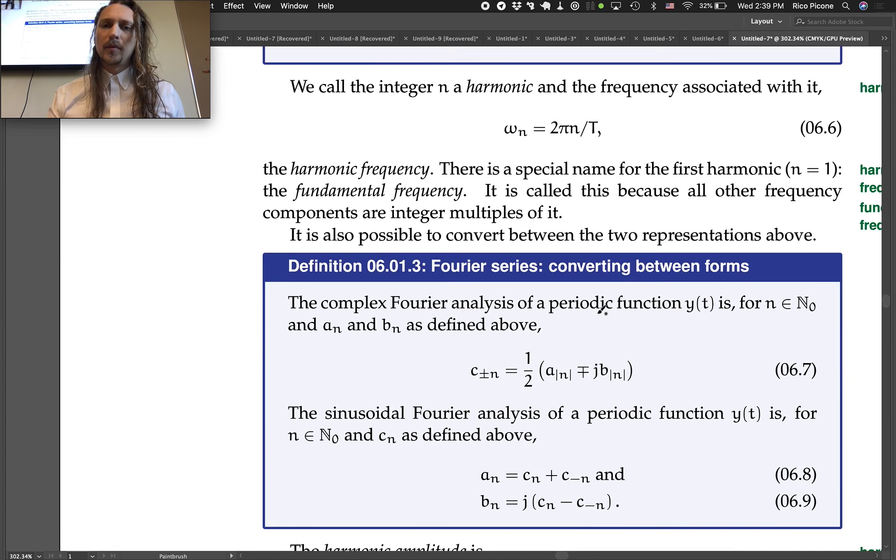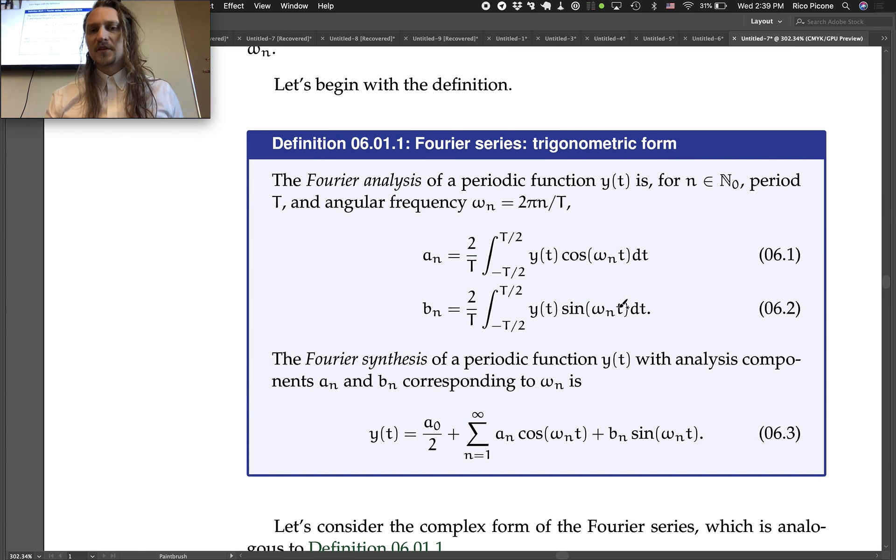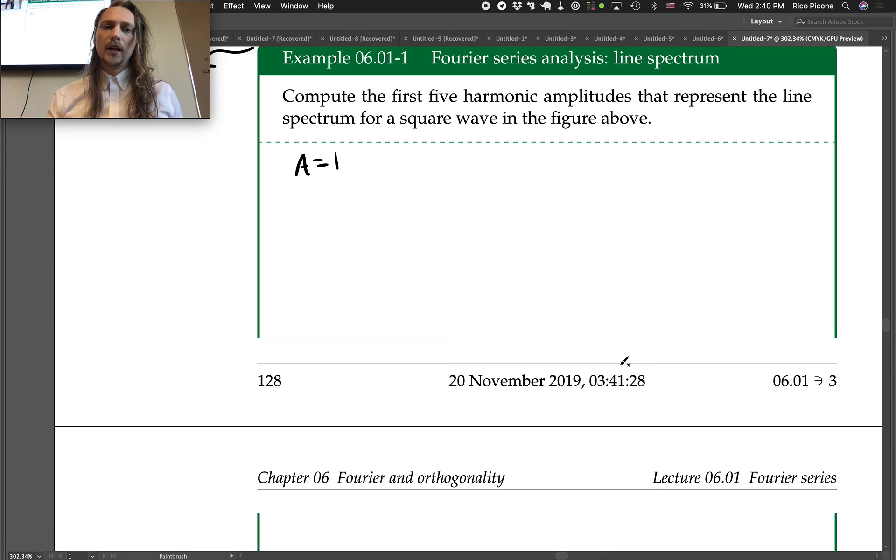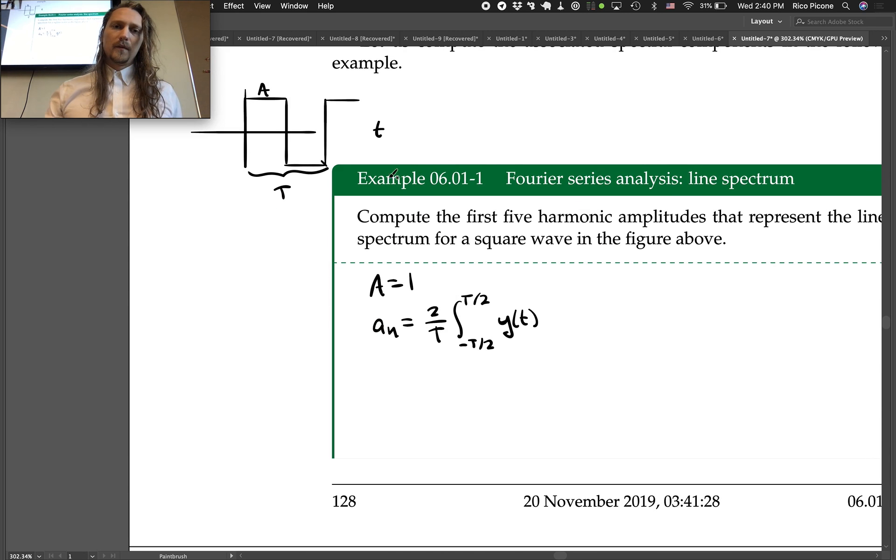We're doing a Fourier analysis. We could either do the complex one here, where we would use equation 6.4, or we could do 6.1 and 6.2. So let's do that one, the 6.1 and 6.2, the an and the bn. So we have our formula for an equals 2 over t integral of negative t over 2 to t over 2 of y of t, where the square wave is our y of t, times cosine of omega n t, so it's 2 pi n over t times t dt.